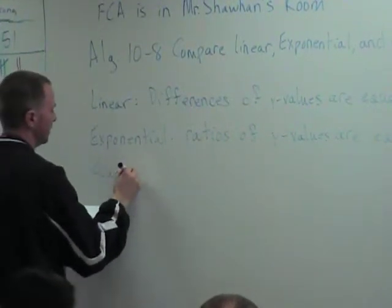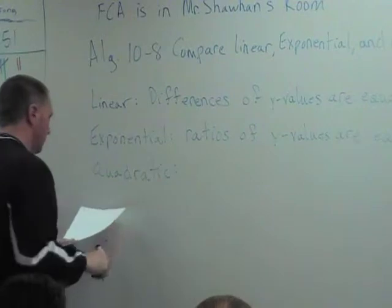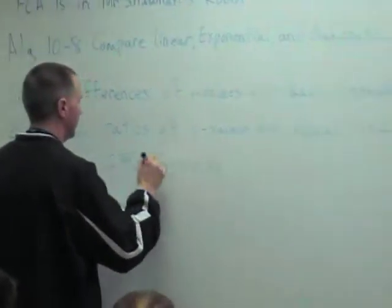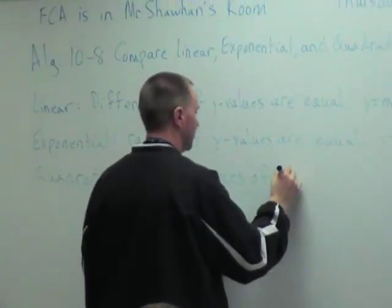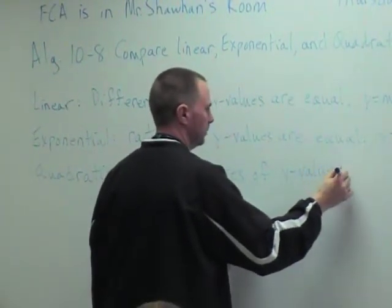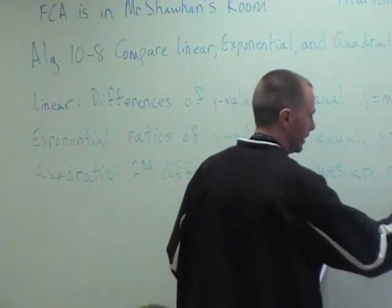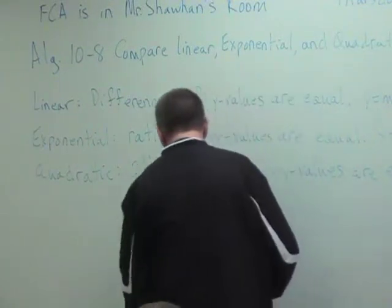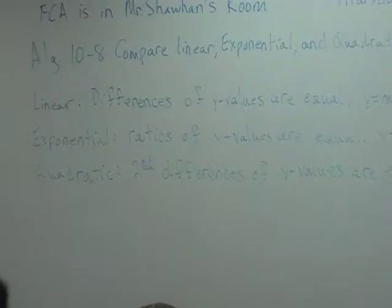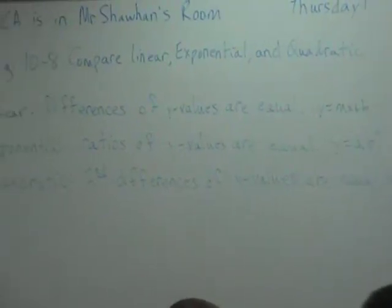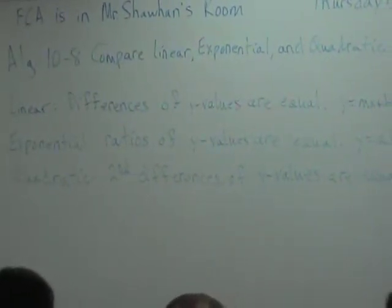And typically, those are really easy to see. And then, if neither one of those work, you're going to assume it's quadratic, but you still have to check it. So a quadratic model, the second differences of the y values are equal. And that forms y equals ax squared. Those are parabolic, which we've already been dealing with. Those are quadratic.